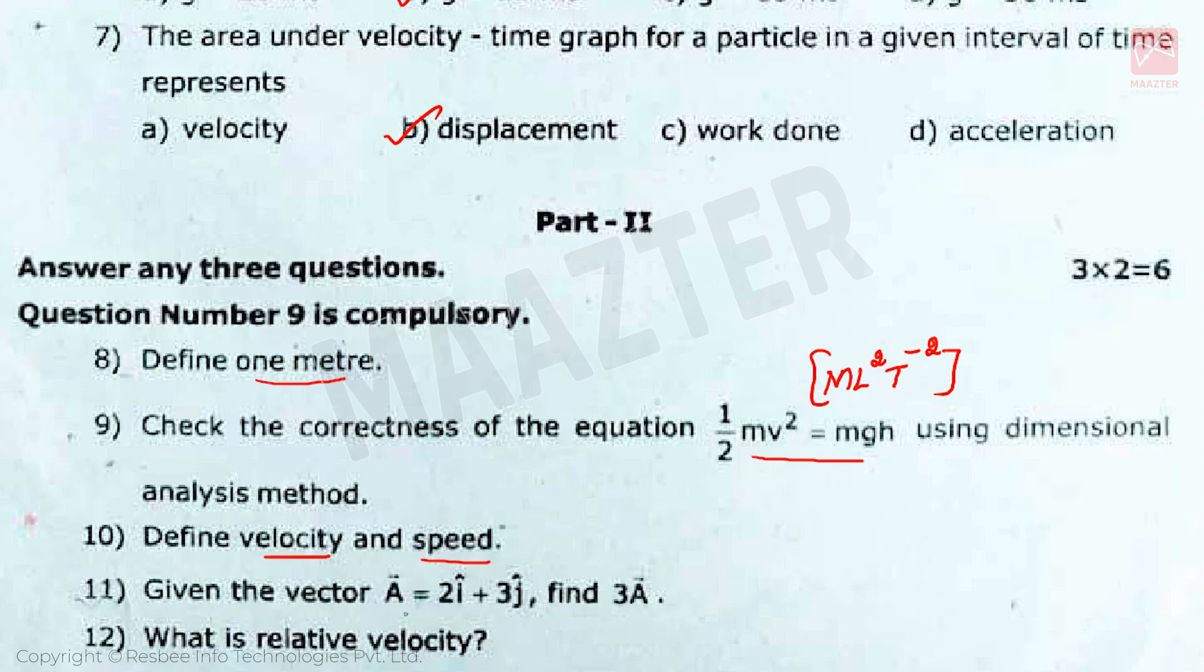Next question: Given the vector a vector is equal to 2i cap plus 3j cap, find 3a vector. This question is very simple. 3 into a vector's value 2i cap plus 3j cap. The answer we get is 6i cap plus 9j cap.